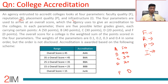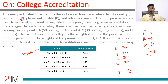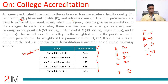Accreditation is awarded based on the overall score: greater than or equal to 45 gives AAA, then BAA, BBA, BBB, and so on. So accreditation is provided on the basis of the overall score.